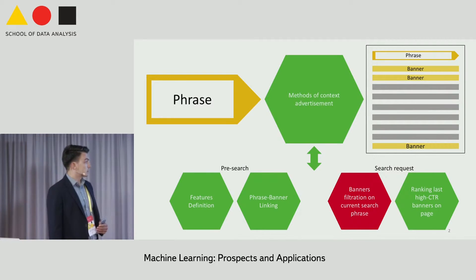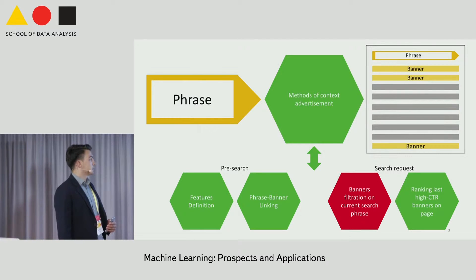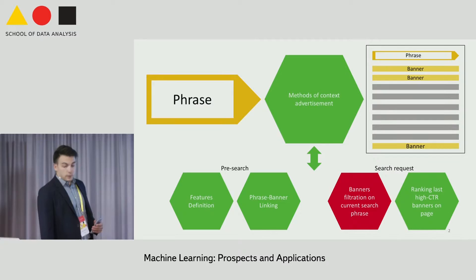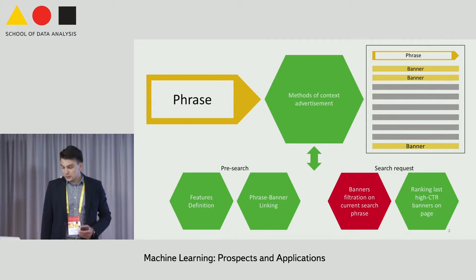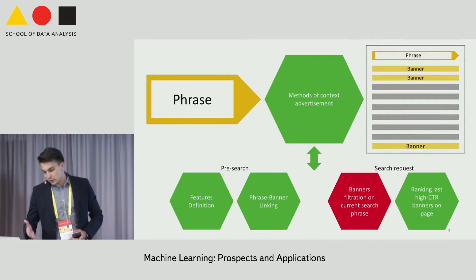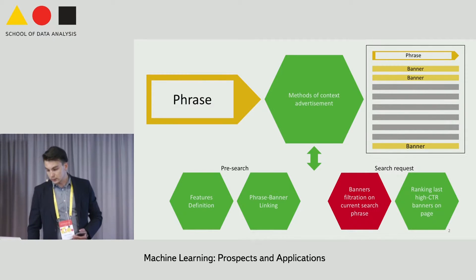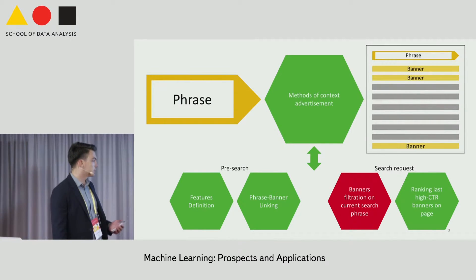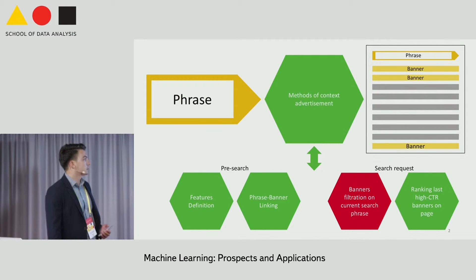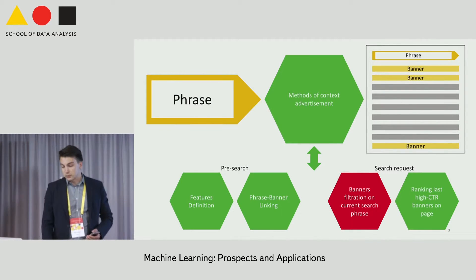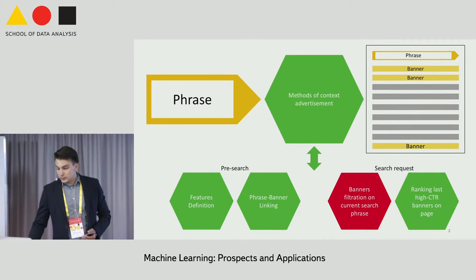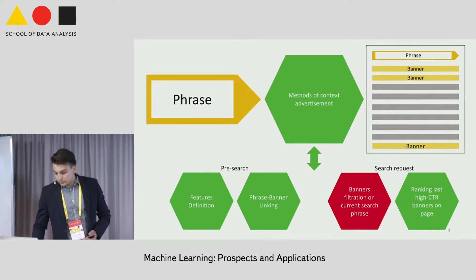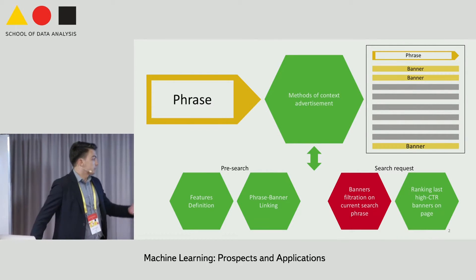This method was implemented in a context system which consists of many methods, such as pre-search with feature definition, phrase banner linking, and on-search methods such as banner filtration and ranking banners on the page, et cetera. I was involved in upgrading the banner filtration part.